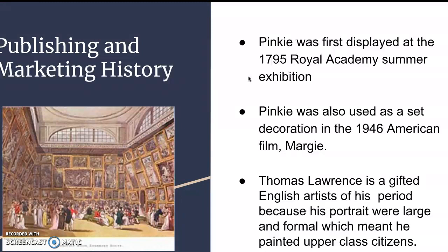Thomas Lawrence was a gifted English painter of his period because his portraits were large and formal, which meant he painted upper-class citizens. Usually, to afford Thomas's paintings, you had to have money, and the bigger his painting was, the more it was worth — because the more canvas he had to work with and the more colors and oil he had to put together in order to give a perfect image that the buyer would like to see.